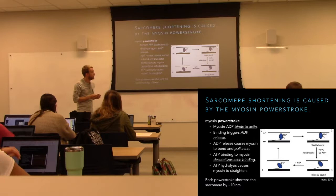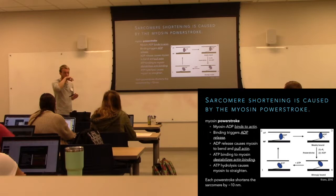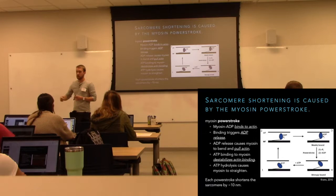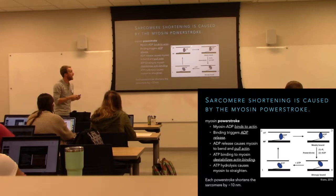In the ADP-bound form, myosin can interact stably with actin. That myosin-ADP head binds to actin — the thin filament. When myosin binds to actin, that destabilizes its interaction with ADP, so it kicks off the extra phosphate, which tightens the interaction, and then it releases the ADP. When ADP is removed, that changes the shape of myosin — it cocks back. Because it's interacting stably with actin, when it moves back, the actin filament moves back as well, pulling those thin filaments.